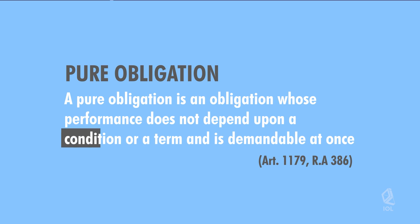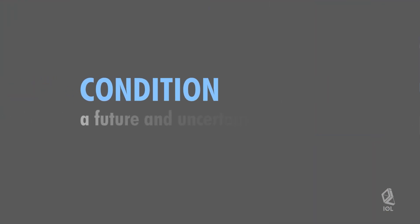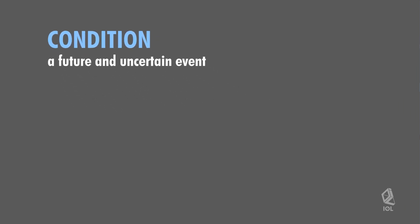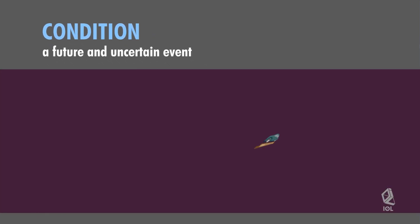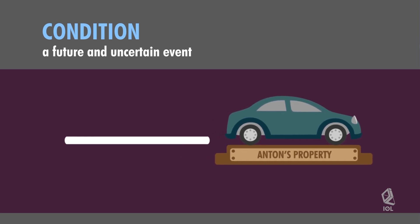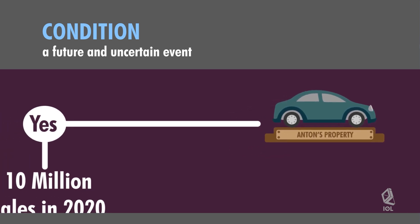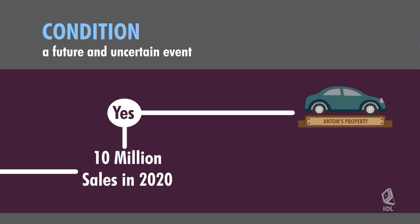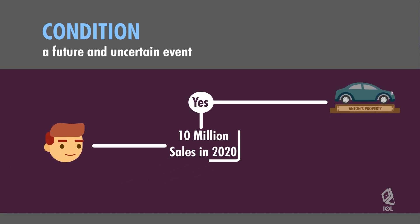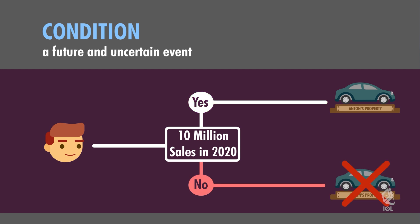A condition is a future and uncertain event, the happening of which shall give rise to or extinguish an obligation subject to it. For example, Anton shall give Henry a car if Henry will be able to reach sales of 10 million pesos for the year 2020. The condition of reaching the target sales may or may not happen; the giving of a car by Anton to Henry shall depend on the happening of such condition.